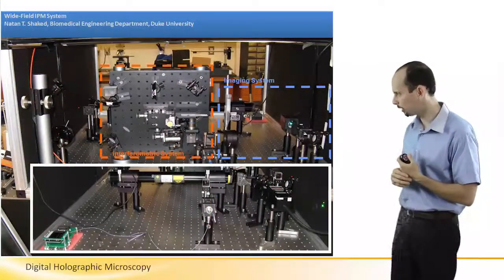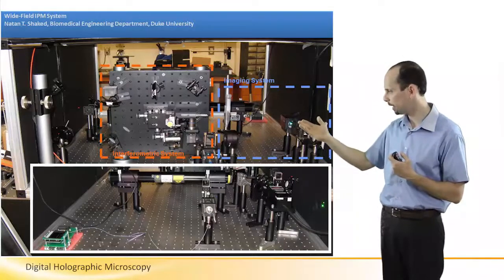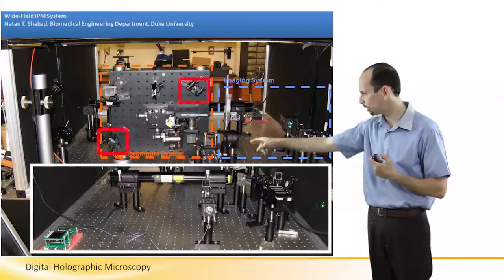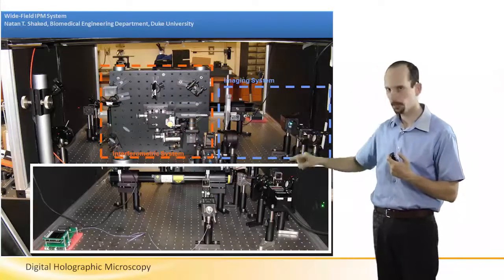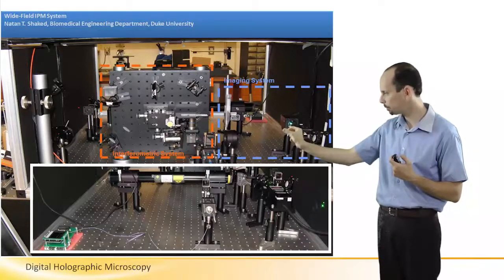This is how it might look in the lab. So we have here the interferometric system, the Mach-Zehnder. We can see here two beam splitters, two mirrors. The sample sits right there. And right below the sample, you can see the microscope objective. And then we have another microscope objective. And this imaging system projects the image onto the camera.